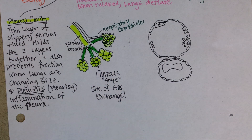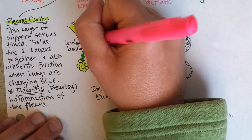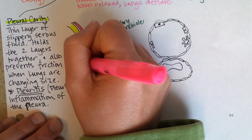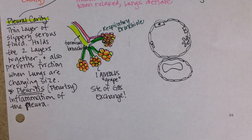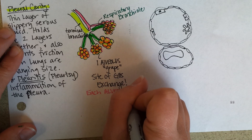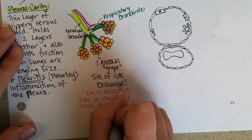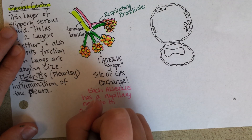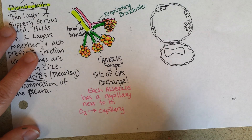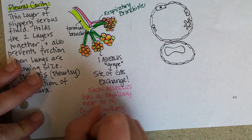Now if you're going to have gas exchange, you've got to have a blood supply. There is an artery that comes to each lung called the pulmonary artery, and it branches to little capillaries that go across or next to each alveolus. That's how the gas exchange occurs — oxygen will go from the alveolus into the capillary, and carbon dioxide will go from the capillary to the alveolus.